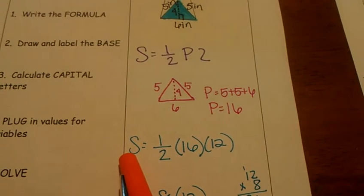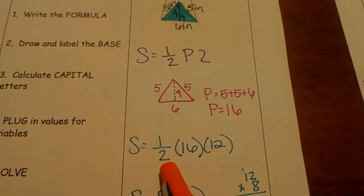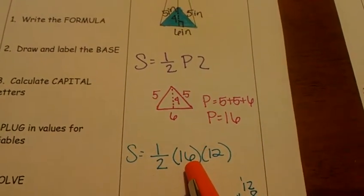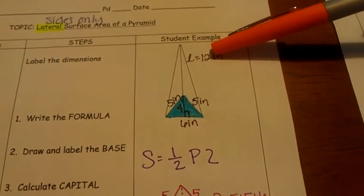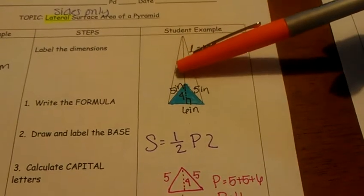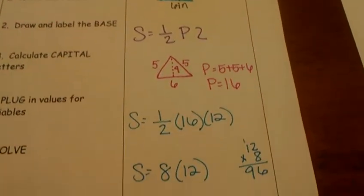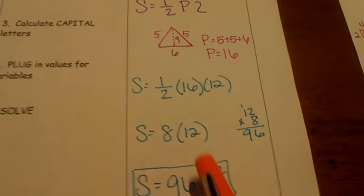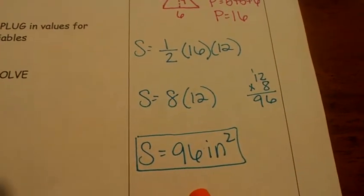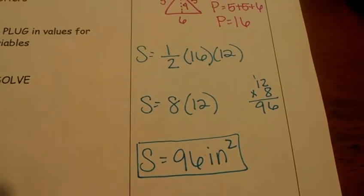So plug in your numbers. Surface area is equal to half of the perimeter, which is 16, times 12, your slant height. Up here, your slant height is given to you as extra information. It's not actually part of your shape. So half of 16 is 8. 8 times 12 is 96. So your lateral surface area is 96 inches squared.